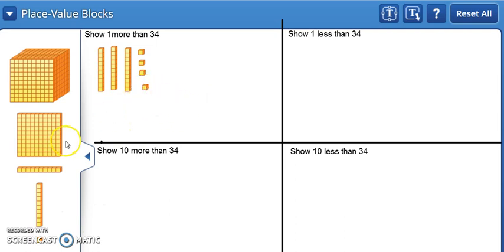To show one more than 34, we add 1. Now we count again: 10, 20, 30, 31, 32, 33, 34, 35. 35 is one more than 34.